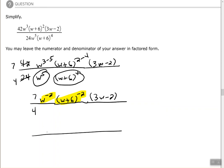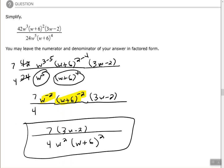So my final step will be to move the W to the negative second down to my denominator, which will change the sign of the exponent, and move the W plus six down to my denominator as well to change the sign of that exponent. And that is fully simplified. You cannot simplify anything else in there, and you can leave it in the factored form per the directions.